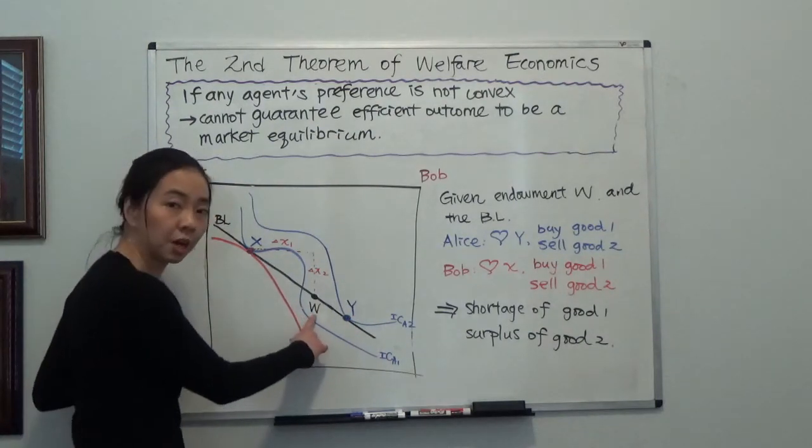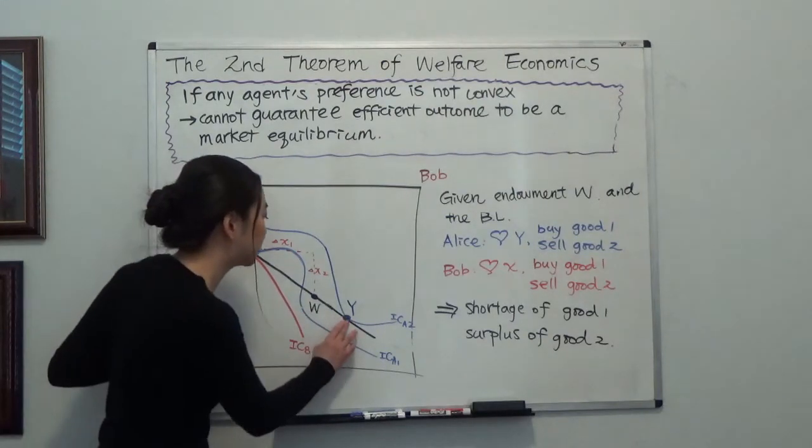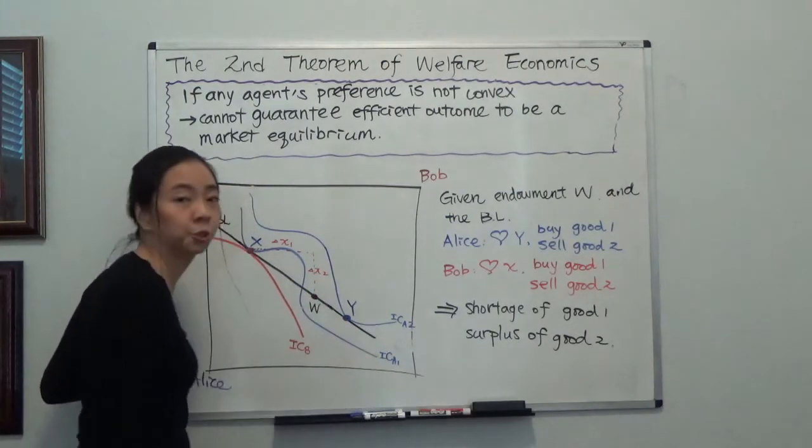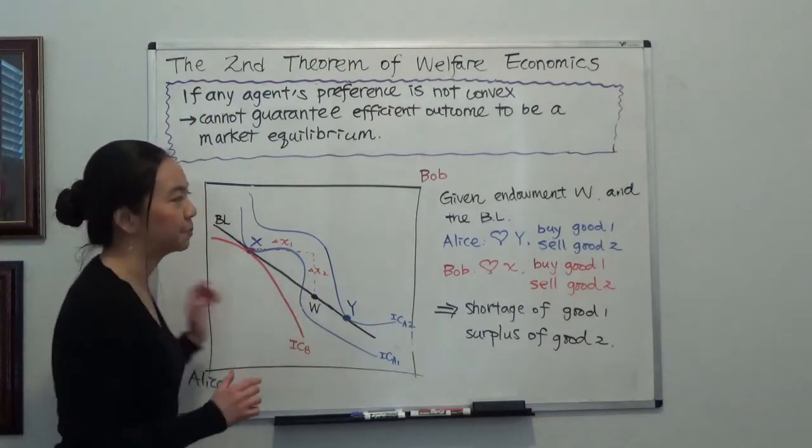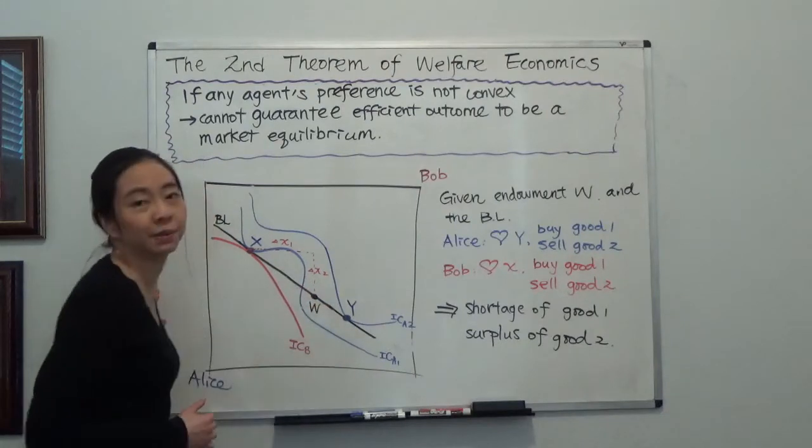So suppose this is an initial endowment W. And Alice will say, I want to move to point y, given this price ratio. And therefore, I want to buy more good one, and I want to sell my good two to buy my good one.